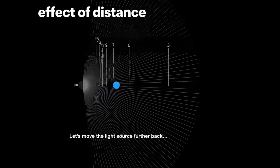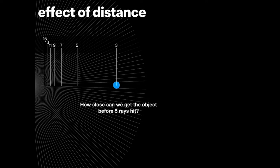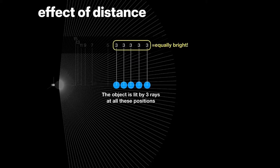Let's move the light source further back so the ball has only three rays of light again. How close can we get the object before five rays hit? If we move the light source a bit closer, in all five positions of the ball we still have three rays. All five blue balls are three rays bright. So over that distance from the first to the last ball, we have the same amount of light — it's equally bright.